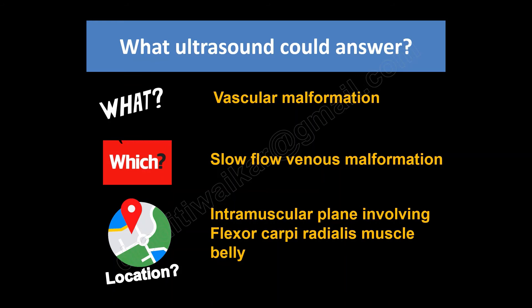Which type was it? A low-flow venous malformation. And the location — ultrasound correctly told us that this lesion was indeed located in the intramuscular plane involving the flexor carpi radialis muscle belly. This is the real game changer, as the location of a soft tissue malformation is really important.